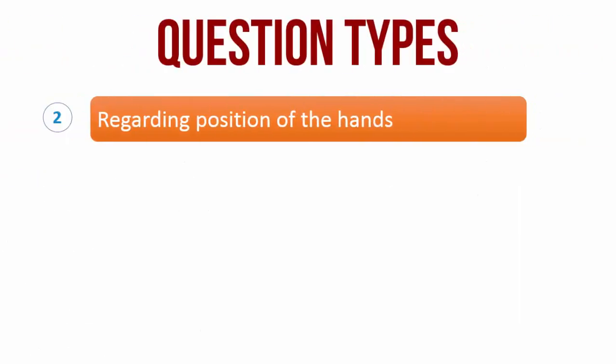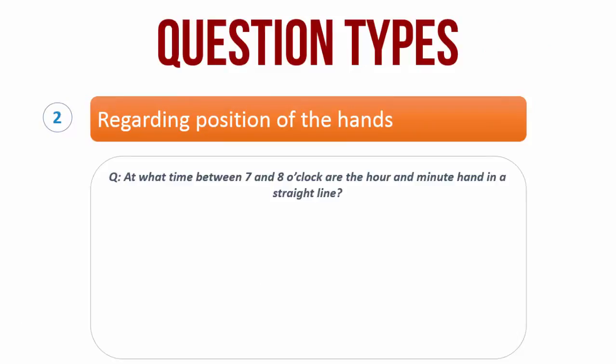The second type of question is regarding the position of the hands. Let us understand this with help of an example. The question is, at what time between 7 and 8 o'clock are the hour hand and the minute hand in a straight line? Now here we are going to use our standard formula.